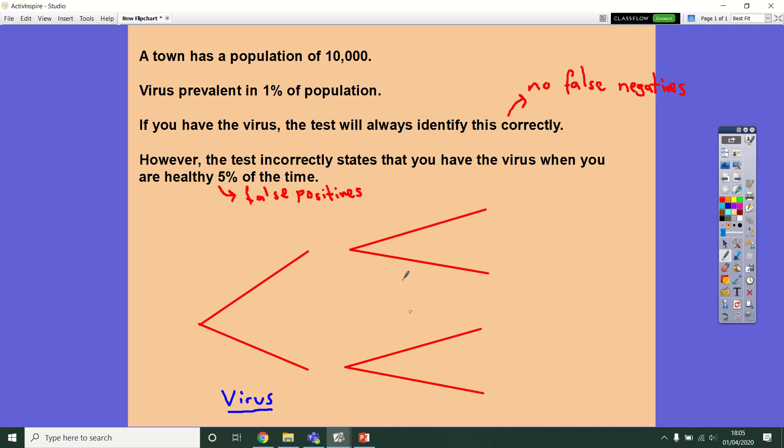And then the second part of the diagram is going to be what the test says. So let's put the population on. We start with 10,000. That's for the whole town. And this is going to be have the virus. This is going to be doesn't have the virus.